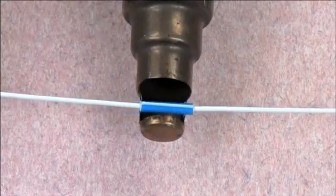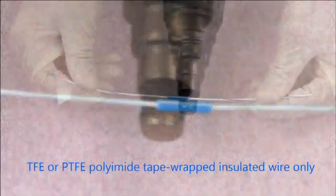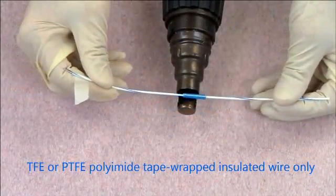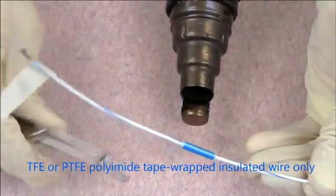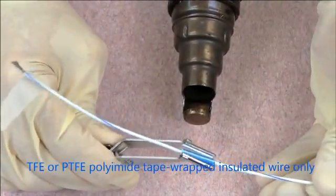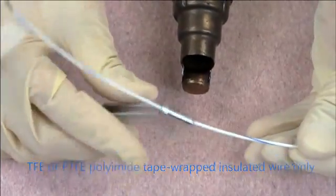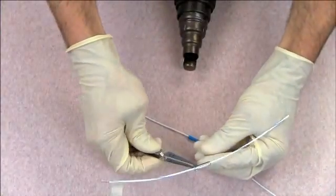Continue heating for about 3 to 5 seconds. If you're repairing TFE or PTFE polyamide tape wrapped insulated wire, use the appropriate milspec installation tool to apply light pressure while the wire is still hot. Allow at least 10 seconds before removing the installation tool.